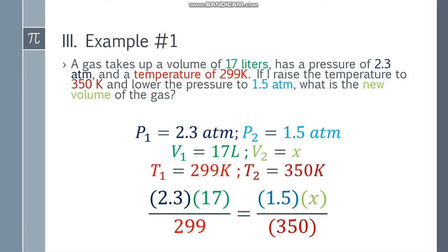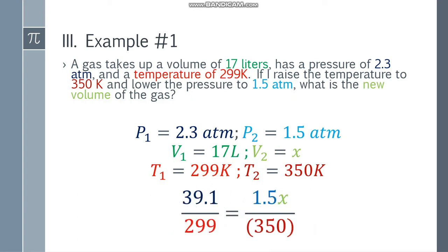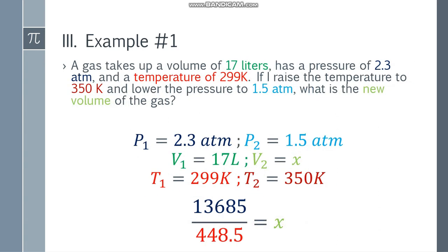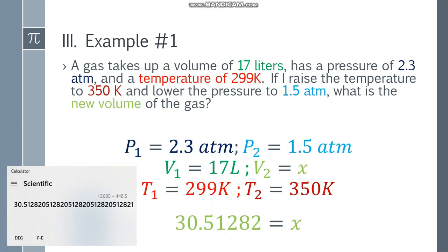To solve for x, let's simplify the numerator first. We have 39.1 on the left side and 1.5x on the right side. Now cross multiply — you will get 13,685 on the left side and 448.5x on the right side. Dividing both sides by 448.5, the value of x is 30.51282...